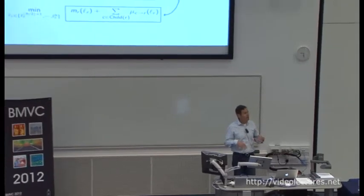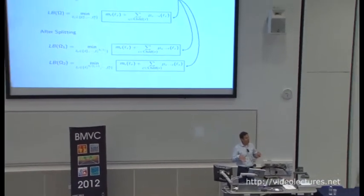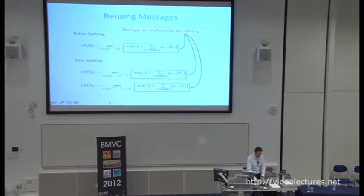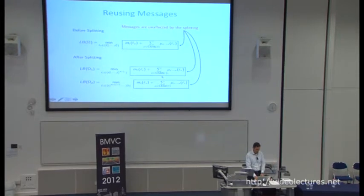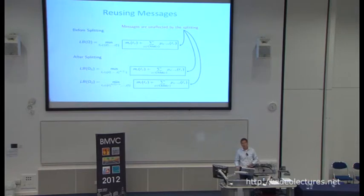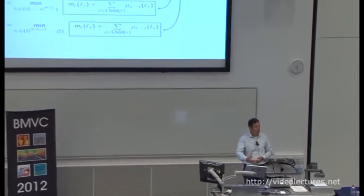Because of the structure of our problem, if we look at message passing within the model, messages are unaffected by the splitting of lower nodes. So we can actually reuse messages computed in a previous computation of the lower bound by using a memoized dynamic programming table. We use dynamic programming to compute the lower bound, the distance transform to reduce complexity further, and then memoize these messages to further reduce complexity.